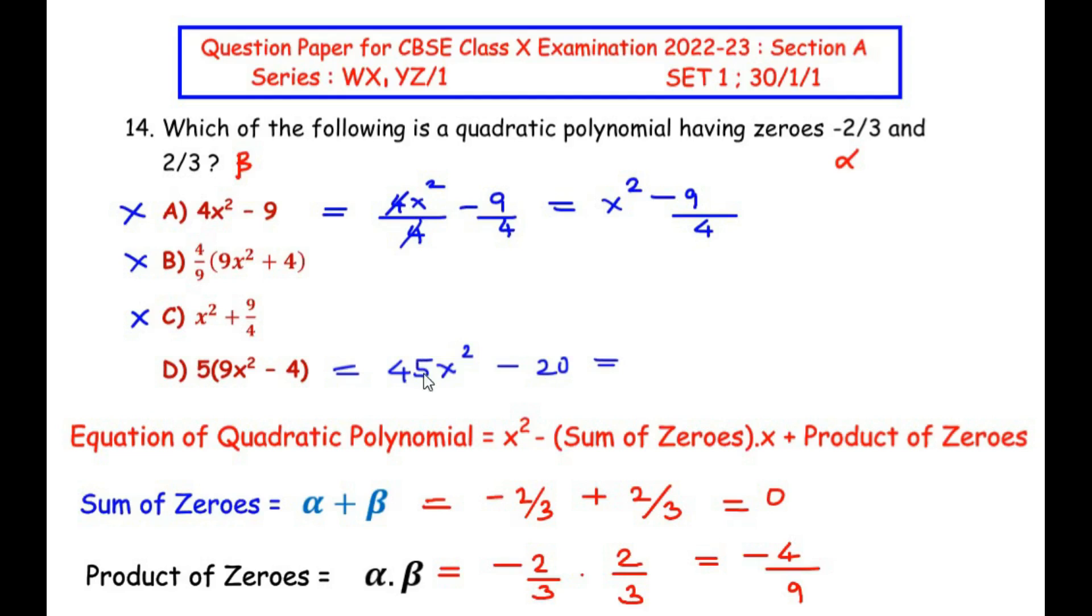Now doing the same step as we did for the previous one, we are going to divide both the terms by 45 as it is the coefficient of x². So here we are going to get 45x²/45 - 20/45. Now here 45 from the numerator divides the 45 from the denominator and 20 and 45 go in the table of 5, that is 5×4 is 20 and 5×9 is 45. So we are left with the answer x² - 4/9.